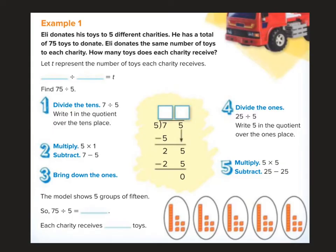Eli donates his toys to five different charities. He has a total of 75 toys to donate. Eli donates the same number of toys to each charity. How many toys does each charity receive? T is going to represent the number of toys. I need to do 75 divided into five equal groups to see how many each charity gets.